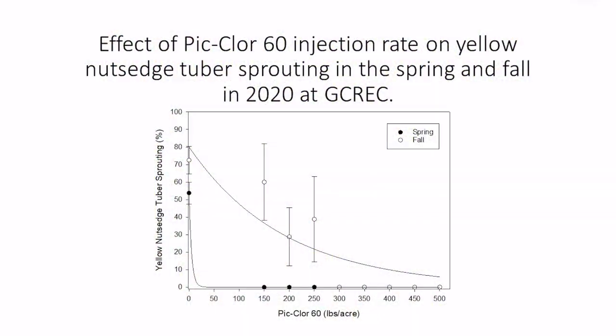The second graph looks at the effect of Pic Clor-60 rate on yellow nutsedge tuber control. For this study, we took bags of tubers and buried them in the field, then fumigated. Two weeks later, we removed the tubers and sprouted them to test for viability — basically, at what rate is the fumigant able to kill a non-sprouted tuber buried in the soil.